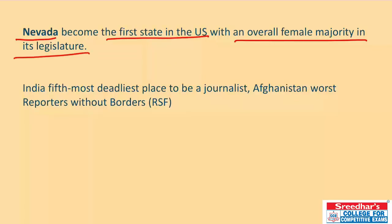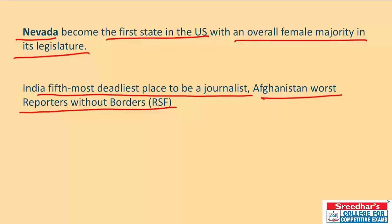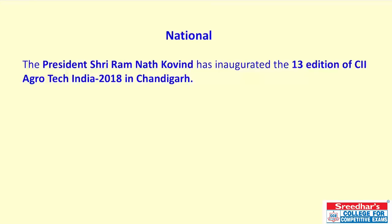Nevada, in the United States, has become the first state to have a majority of female persons in its legislature. According to the RSF (Reporters Without Borders) report, India has been chosen as the fifth most deadliest place to be a journalist, while Afghanistan is the worst. This means Indian journalists do not have proper rights and freedoms. Let us now see some national news for December.